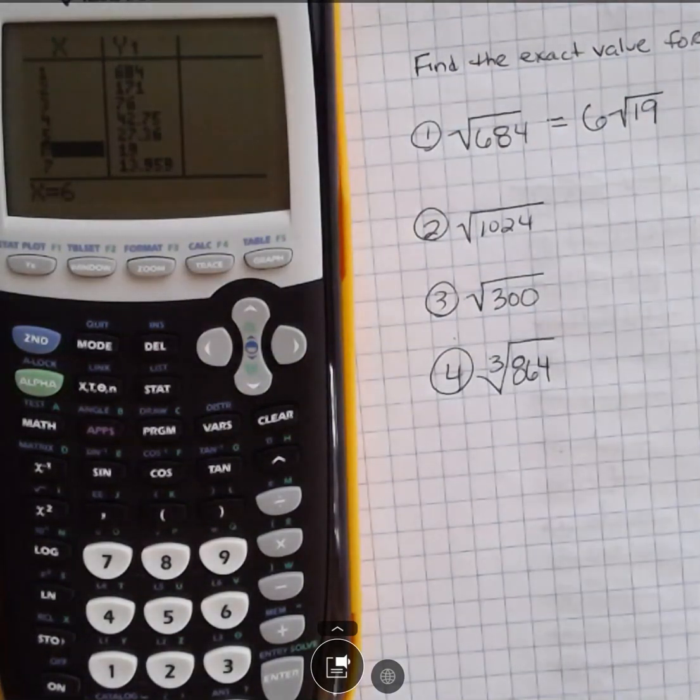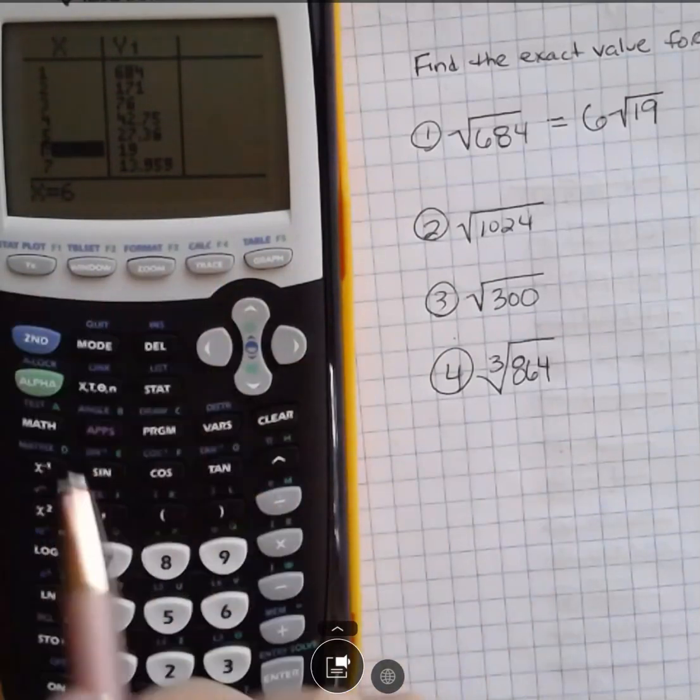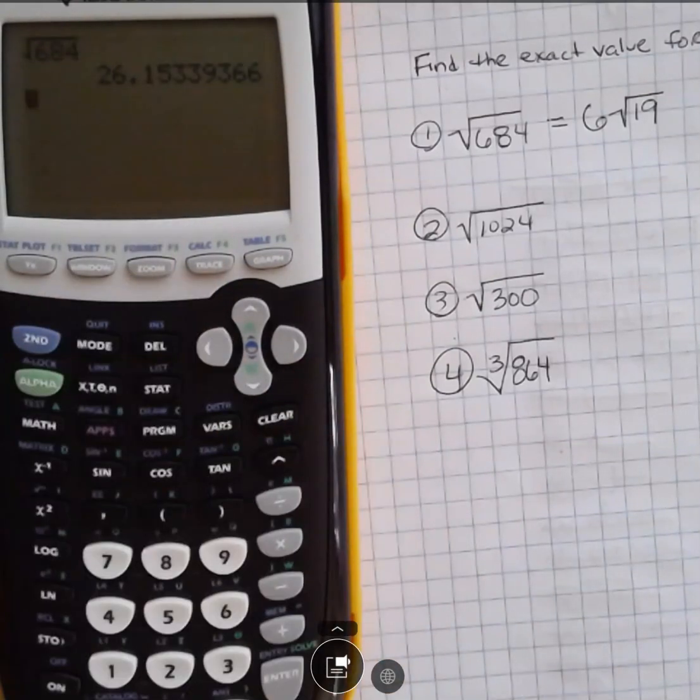So that would be 6 square root of 19. So you could go down the list. Now, what I suggest is that, remember we're going to get out of this by second quit. What I would suggest is try your number. Maybe 1024 is a perfect square.